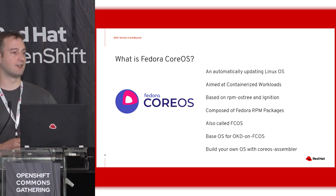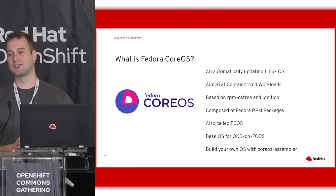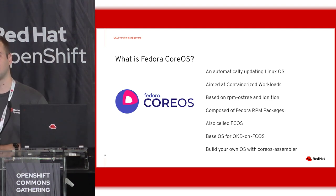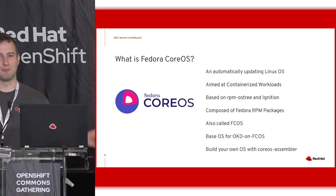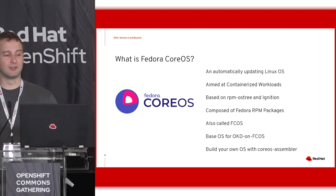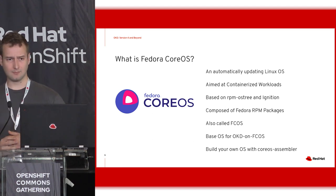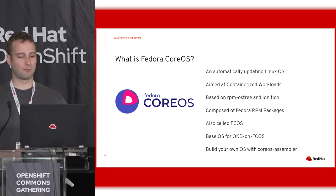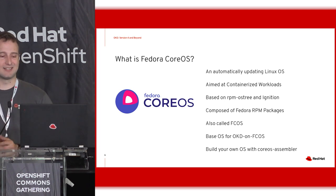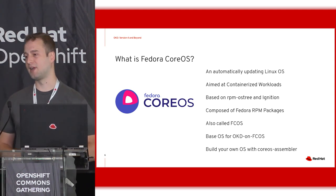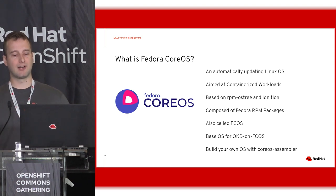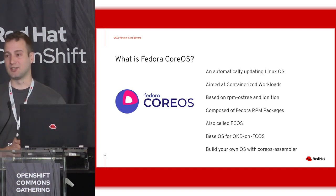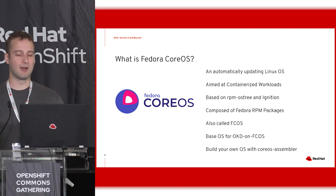In general, it's an OS aimed at containerized workloads. It's based on RPM OS tree and Ignition. Ignition is the first boot provisioning and configuration tool that came in with the CoreOS acquisition — a really cool thing. We can declaratively configure machines in different clouds on first boot. Fedora CoreOS is composed of Fedora RPM packages. It doesn't use the same build system for creating images; we have the CoreOS assembler for that, which you can use to actually build your own OS out of RPM packages.